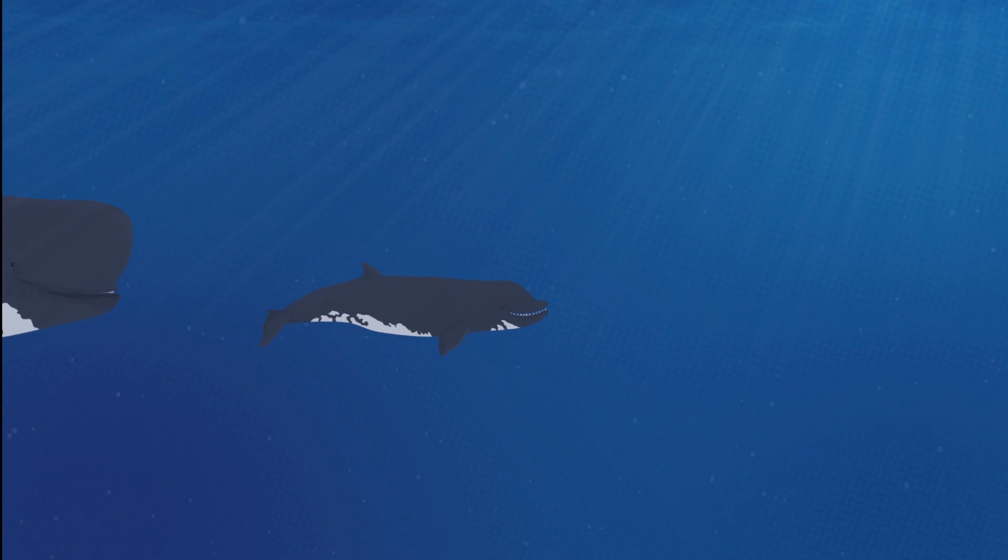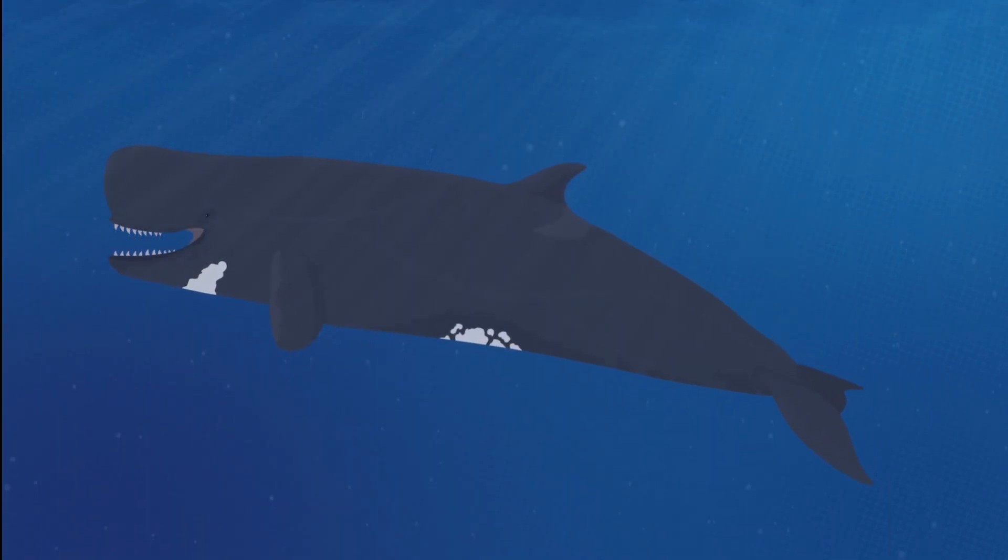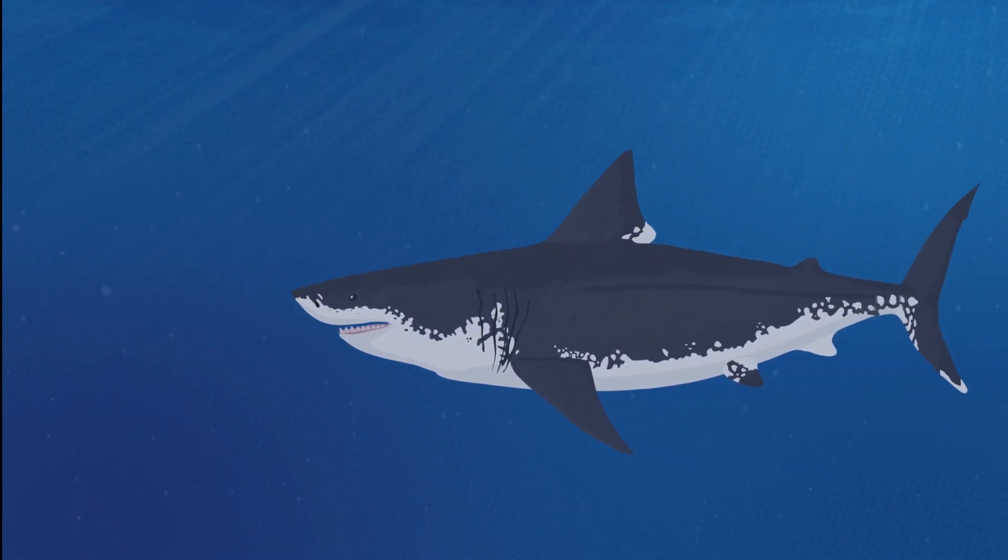Acrophyseter and Leviathan were two species of raptorial sperm whales from the Pisco Formation of modern-day Peru. Given its larger size, Leviathan would have hunted the smaller whales of the region and may have competed with the mighty Megalodon for resources.